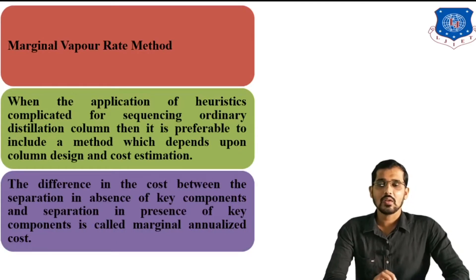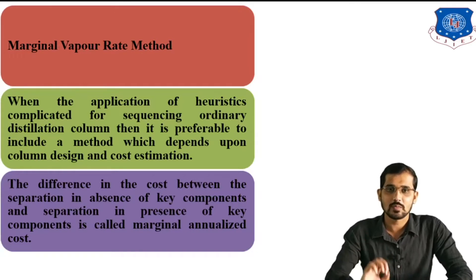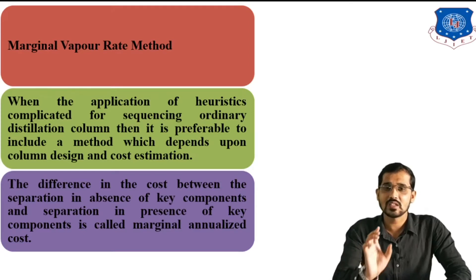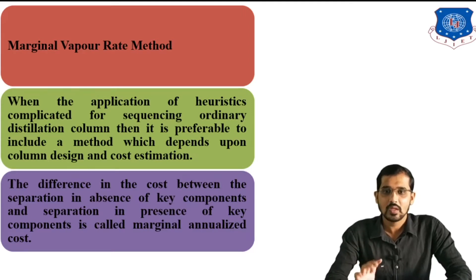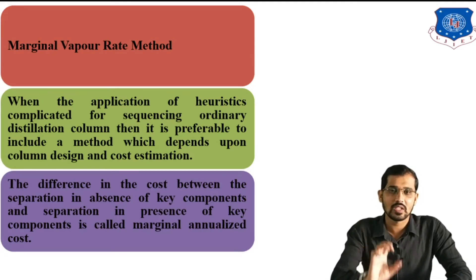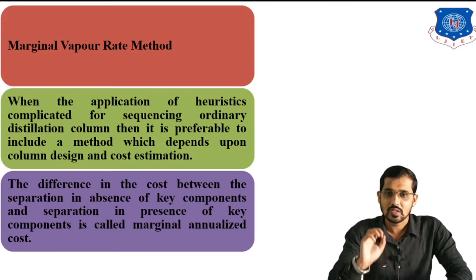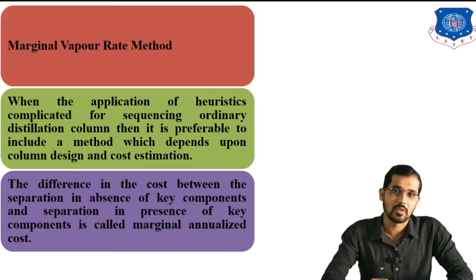First, we will understand what is the meaning of the marginal vapor rate method. According to this method, when the application of heuristics — that is, rules for sequencing ordinary distillation columns — becomes complicated, it is preferable to use a method which depends upon column design and cost estimation. Marginal vapor rate method is based on column design and cost estimation. Whenever heuristics are complicated, we move to the marginal vapor rate method.